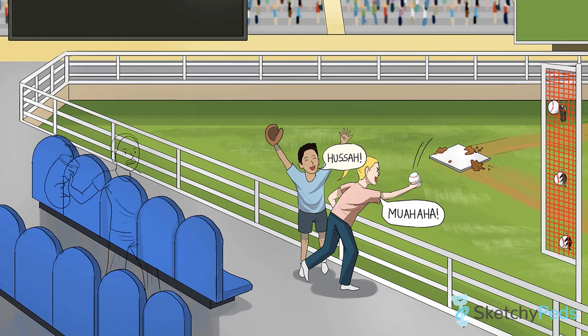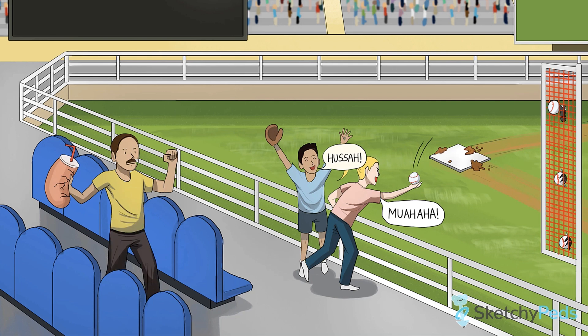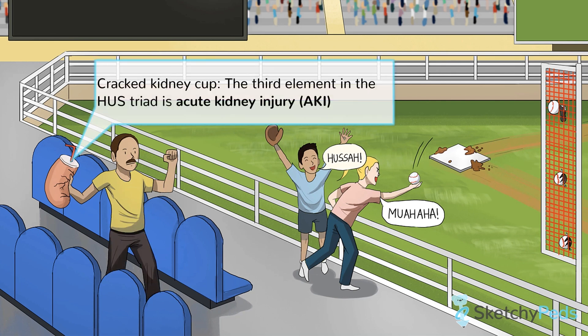And finally, there's the acute kidney injury, or AKI, which can range from hematuria and proteinuria to end-stage renal disease. HUS is one of the most common causes of AKI in children, and as many as 50% of pediatric HUS cases will require dialysis at some point. Our recurring Sketchy symbol of a cracked kidney for AKI will help you remember the third leg of the HUS tripod.